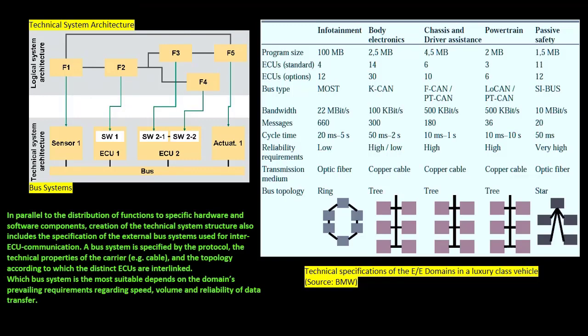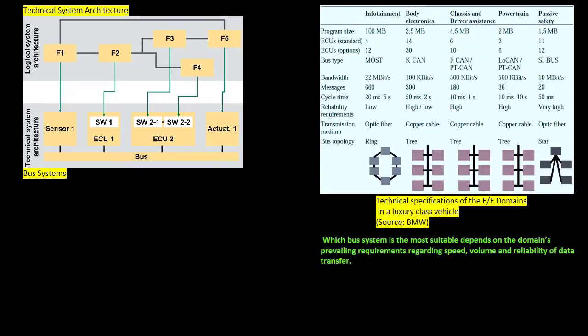In parallel to the distribution of functions to specific hardware and software components, creation of the technical system structure also includes the specification of the external bus systems used for inter-ECU communication. A bus system is specified by the protocol, the technical properties of the carrier (for example, cable), and the topology according to which the distinct ECUs are interlinked. Which bus system is most suitable depends on the domain's prevailing requirements regarding speed, volume, and reliability of data transfer.